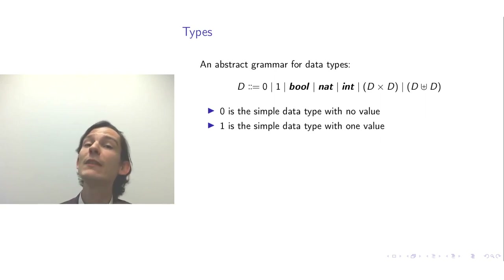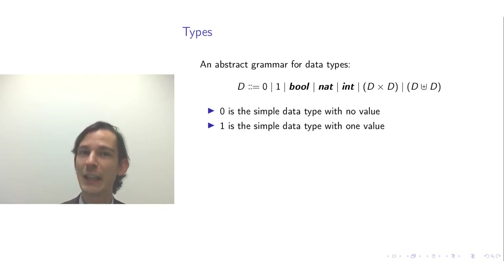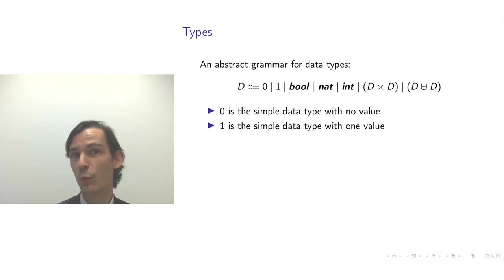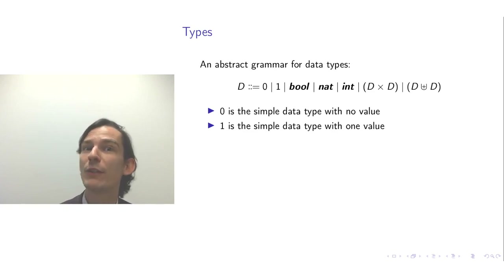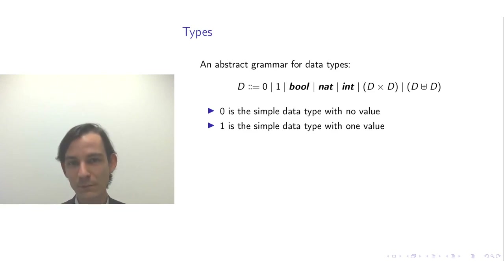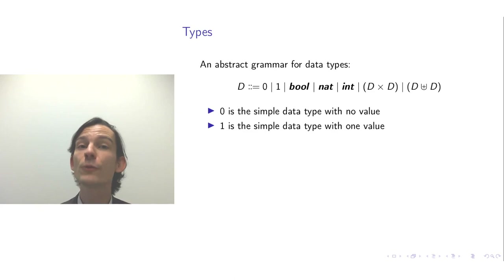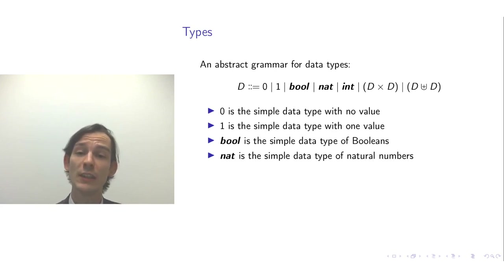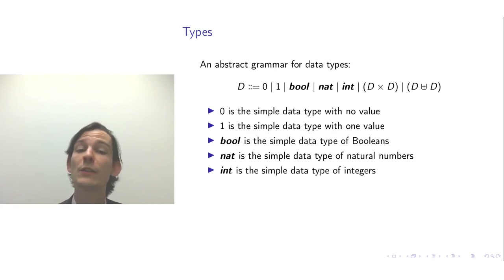Then you have 1, which you could also see as a different name for the void data type from a previous video. It is a simple data type with exactly one value. If a data type has exactly one value, you don't gain much information from it, because you cannot discriminate multiple values. Then we have more useful types: bool, the simple data type of booleans (true, false); nat, the simple data type of natural numbers; and int, the simple data type of integers.